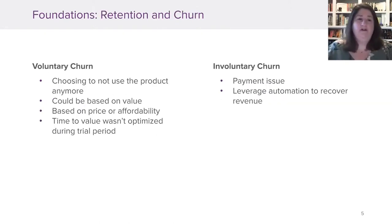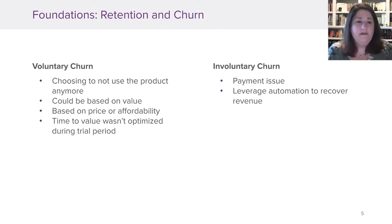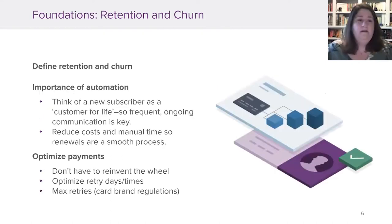As we look at churn, there are two key categories: voluntary versus involuntary churn. Voluntary is when the customer decides they don't need the product anymore — it could be based on value, affordability, or the trial period not proving time to value. Involuntary churn is a problem with the customer's payment information, and this is where a lot of automation can help recover those customers.